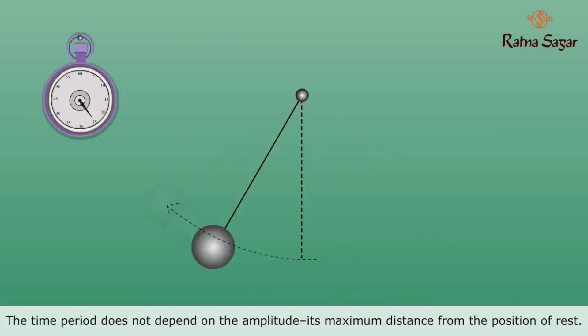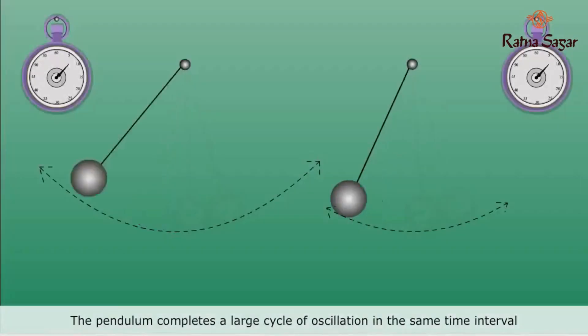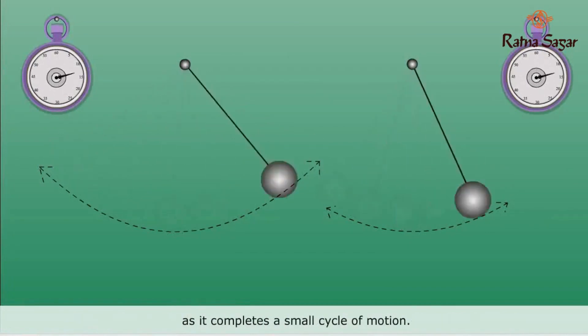The time period does not depend on the amplitude, its maximum distance from the position of rest. The pendulum completes a large cycle of oscillation in the same time interval as it completes a small cycle of motion.